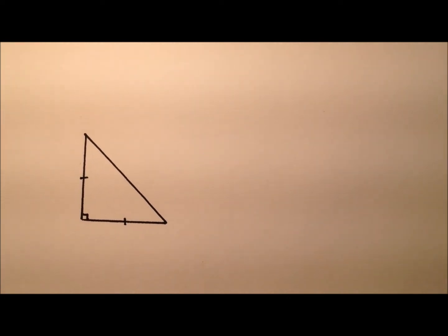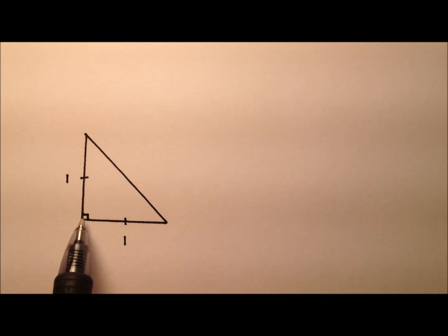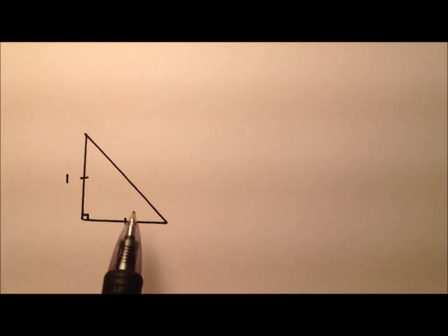If we have an isosceles right triangle, these two leg lengths are the same, we could call them one unit each. The interior angles of a triangle add up to 180 degrees, and we know if this is a right triangle and this is a right angle, 90 degrees are used up already, so we have 90 degrees left to divide between these two angles.